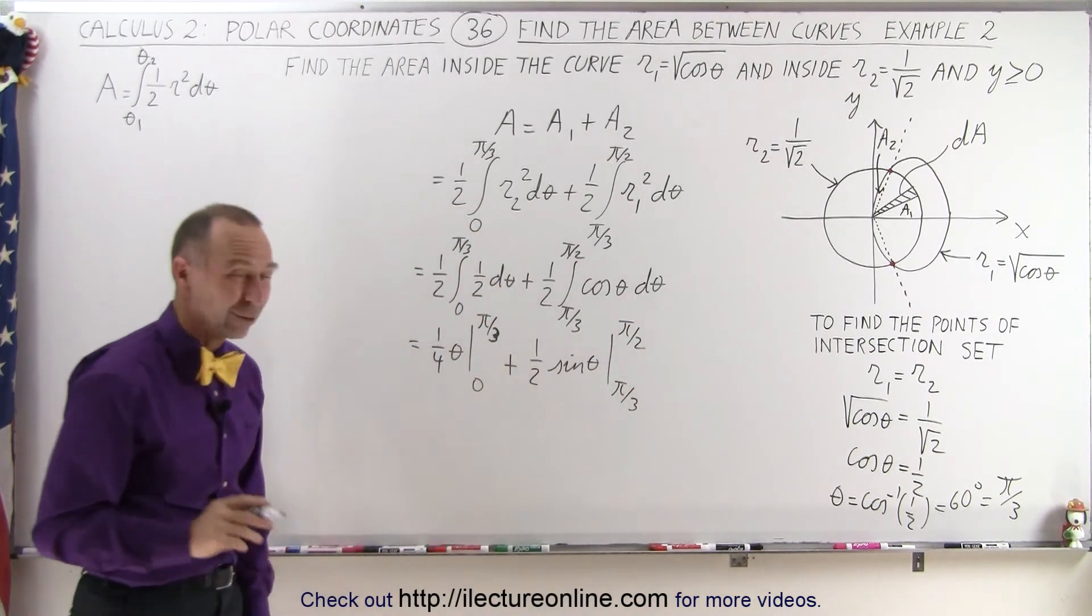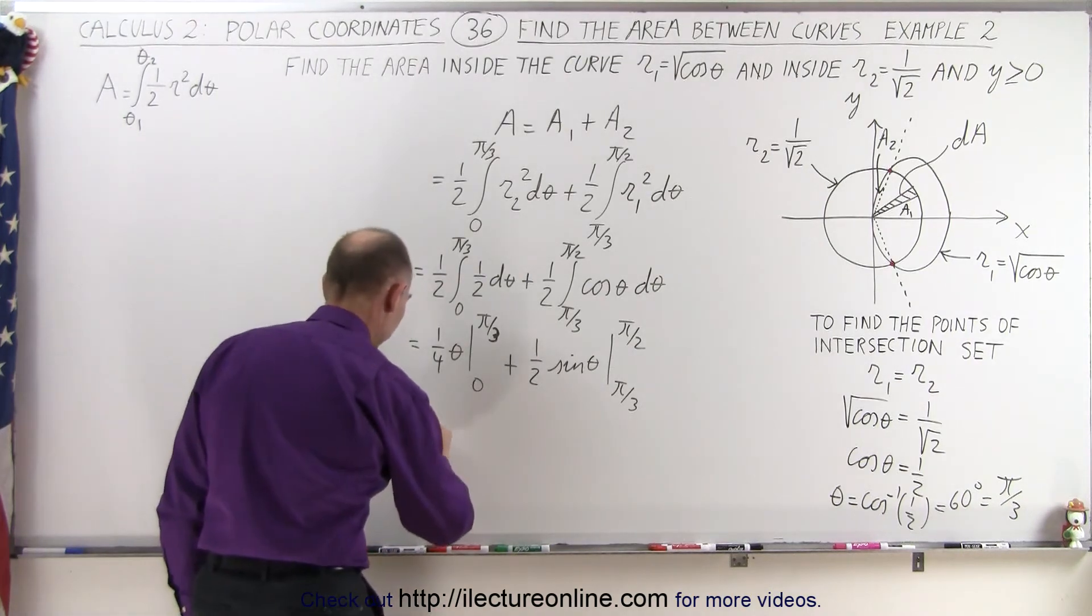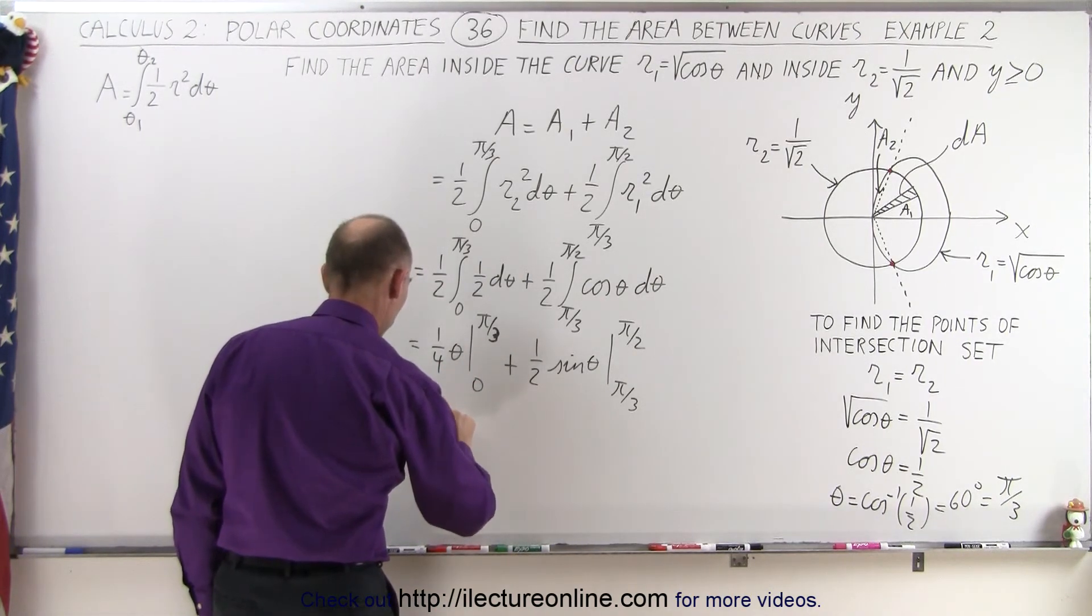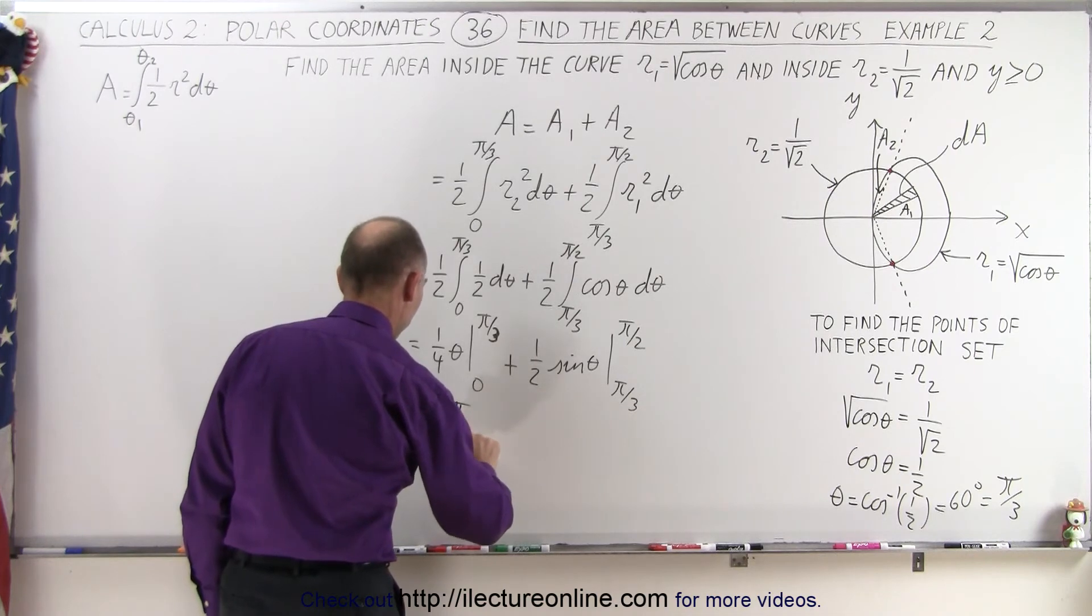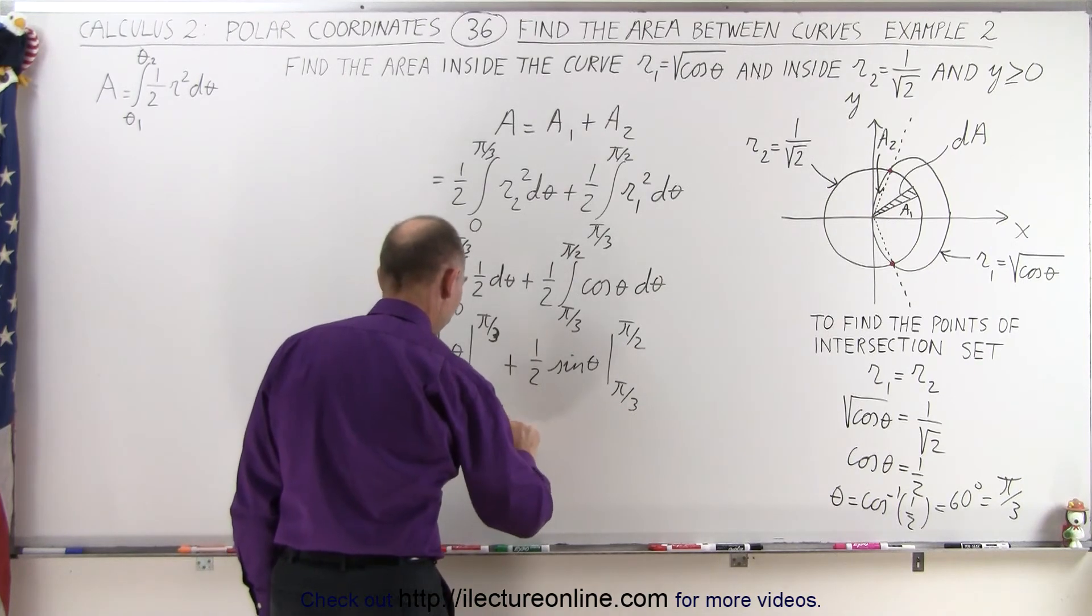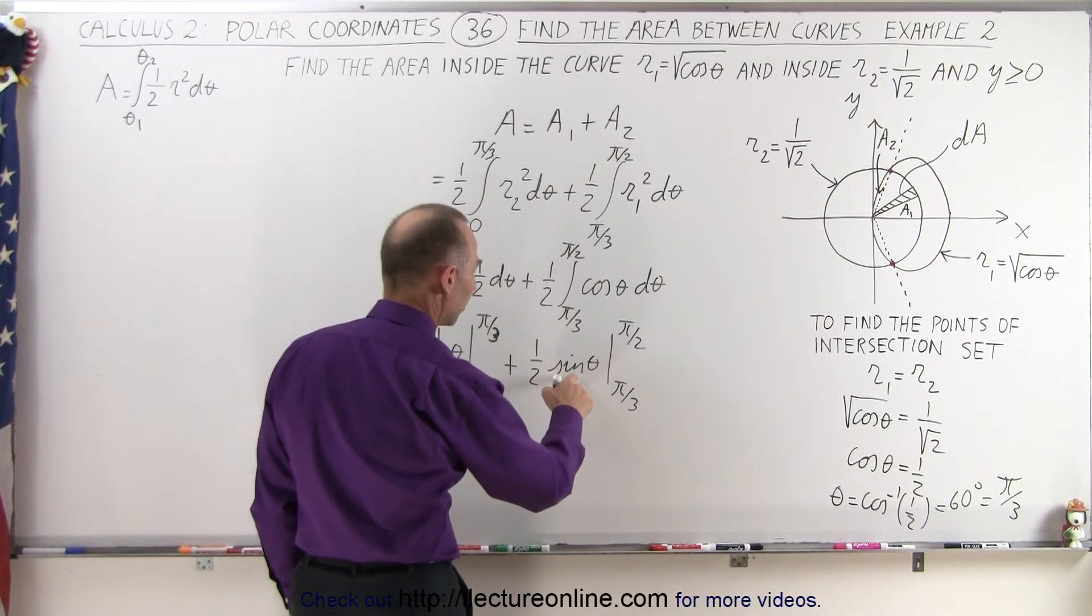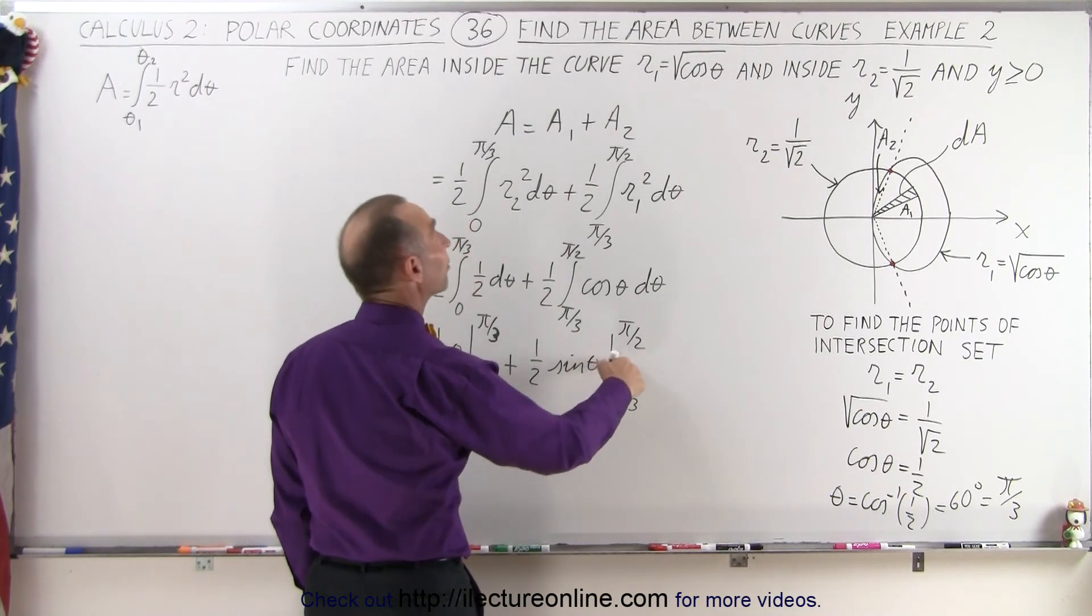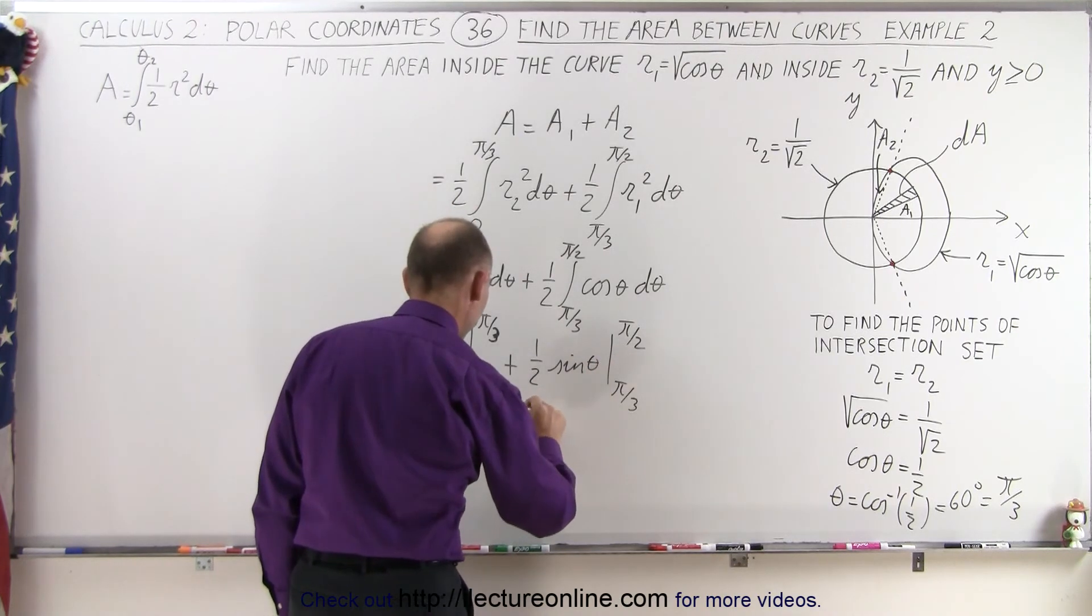Let's go ahead and plug in all those limits and see what we get. So this is equal to 1 quarter times pi over 3, plus 1 half times, when plugging the upper limit we get the sine of pi over 2, that's 90 degrees, which is 1.